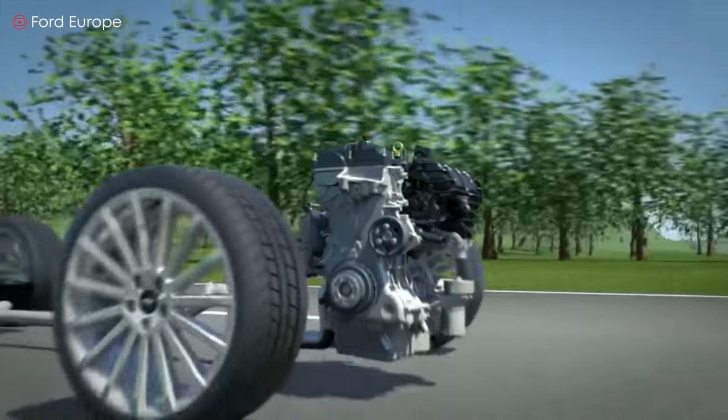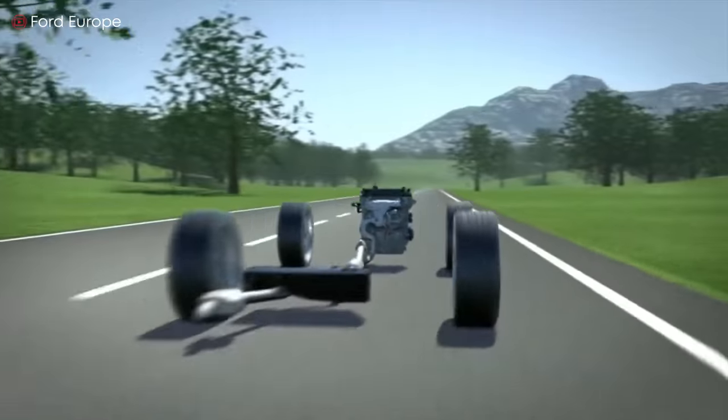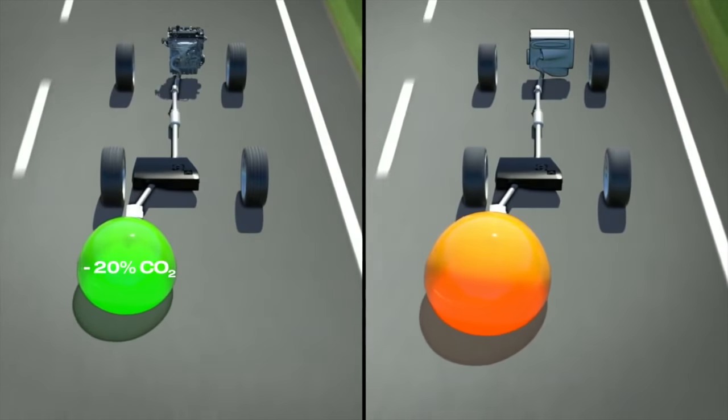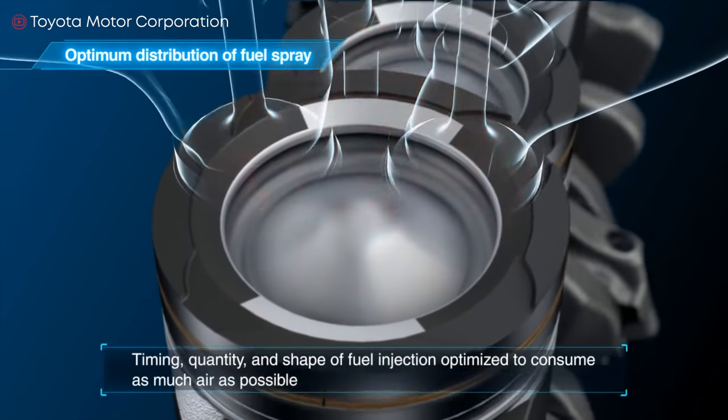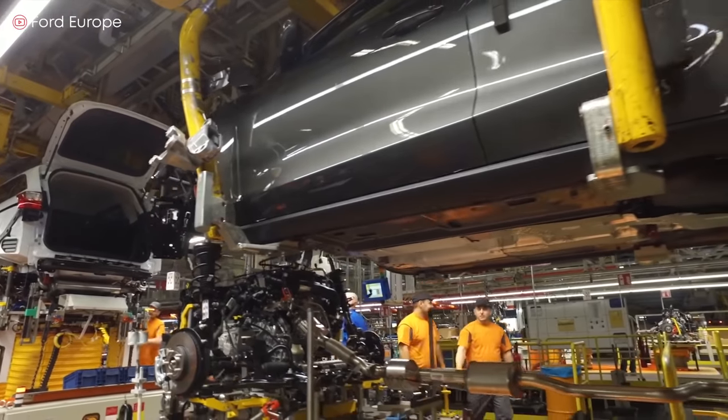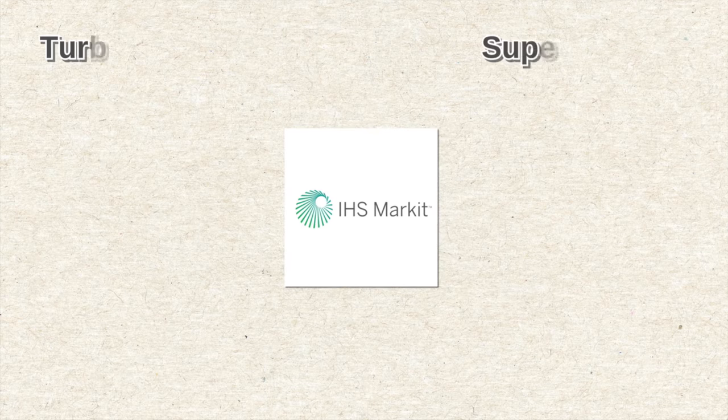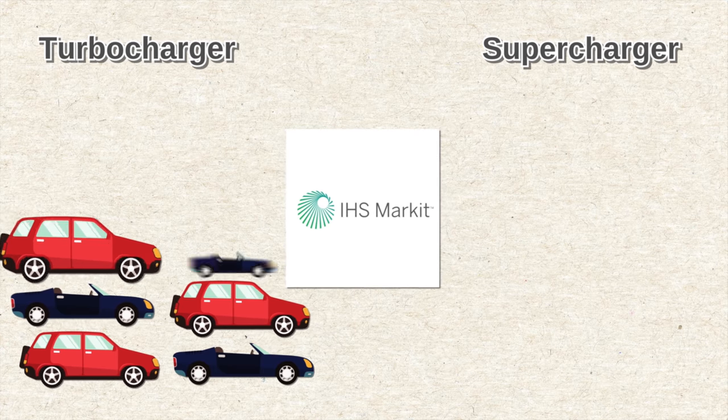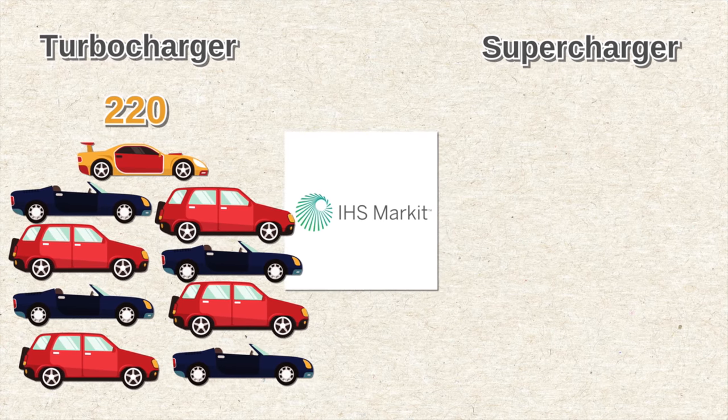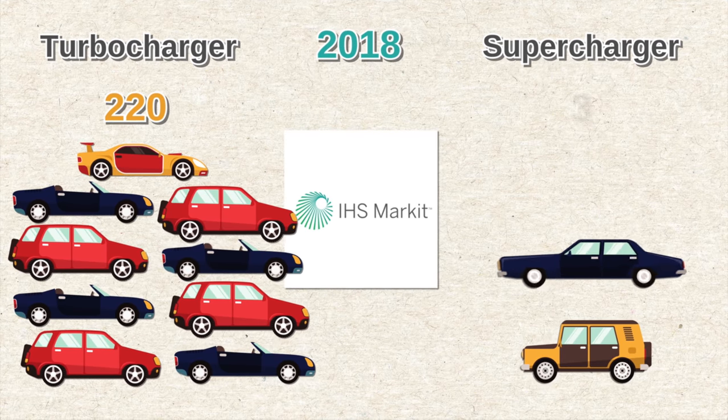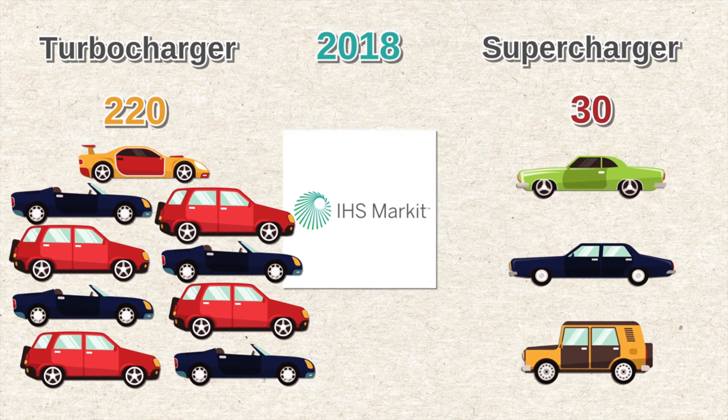Federal requirements for ever improving fuel efficiency, stringent greenhouse gas emission standards, and customers desire for fuel economy are moving automakers to prefer turbos over superchargers. For example, the global information company IHS market found that 220 car models offered a turbocharged engine in 2018, compared to just 30 models with a supercharged engine.